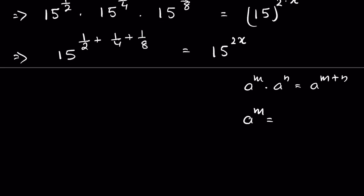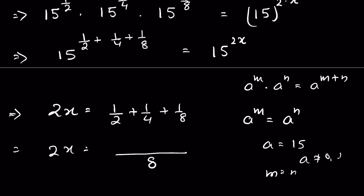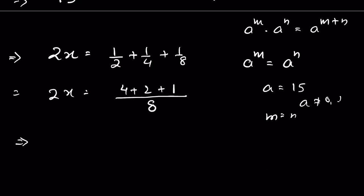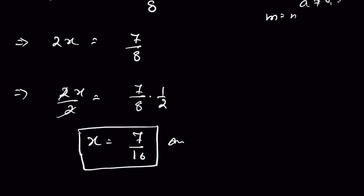When a raised to the power m is equal to a raised to the power n, and here a is equal to 15 — meaning a is not equal to 0 or 1 — then m is equal to n, so exponents are equal. We can write 2x is equal to 1 upon 2 plus 1 upon 4 plus 1 upon 8. The common denominator is 8, so that is 4 plus 2 plus 1, giving 2x equal to 7 upon 8. Dividing both sides by 2, x is equal to 7 upon 16. So that is one way of finding the answer.